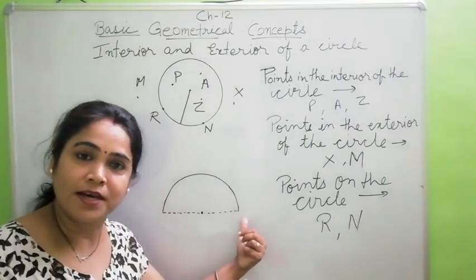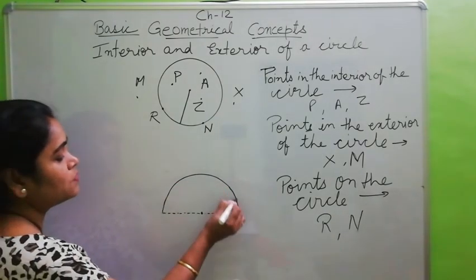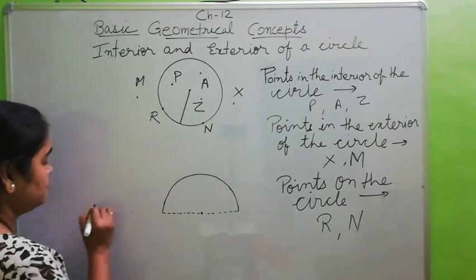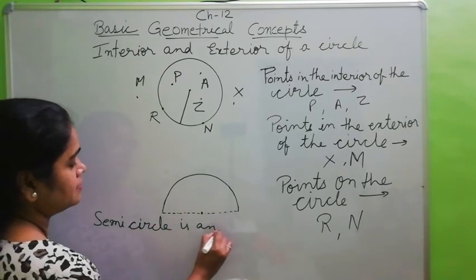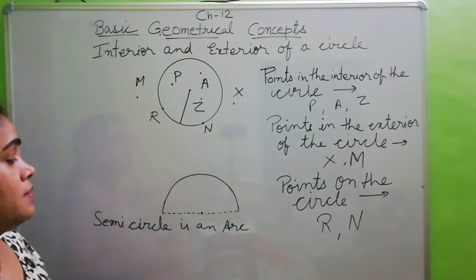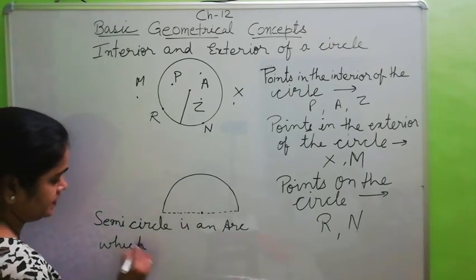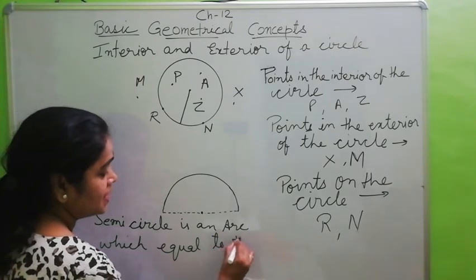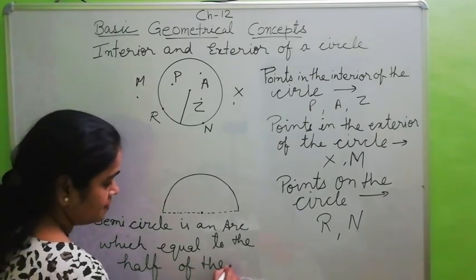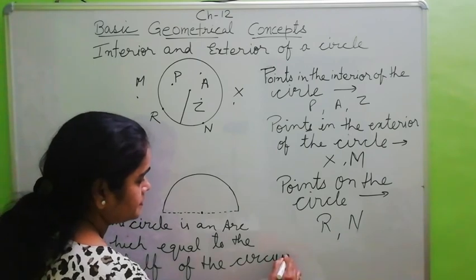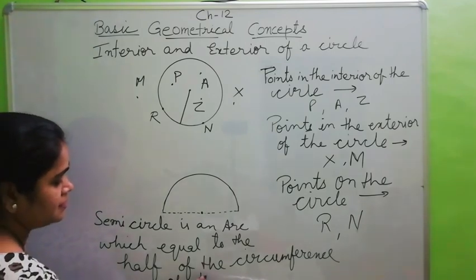The diameter is also the longest chord of the circle. We can also see that each half is an arc. So a semi-circle is an arc which is equal to half of the circle — specifically, it is equal to half of the circumference of the circle.